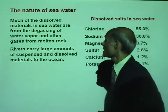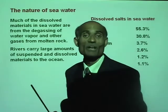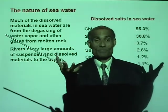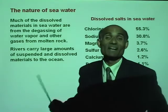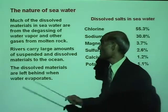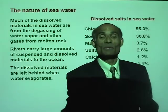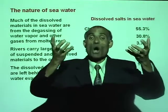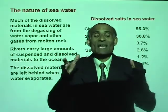Rivers carry large amounts of suspended and dissolved minerals to the ocean when rain and wind breaks down rocks. All those small particles and minerals are washed and carried to the sea, increasing the mineral content of seawater. Dissolved materials are also left behind when water evaporates, since only fresh water becomes water vapor and all the dissolved minerals remain.